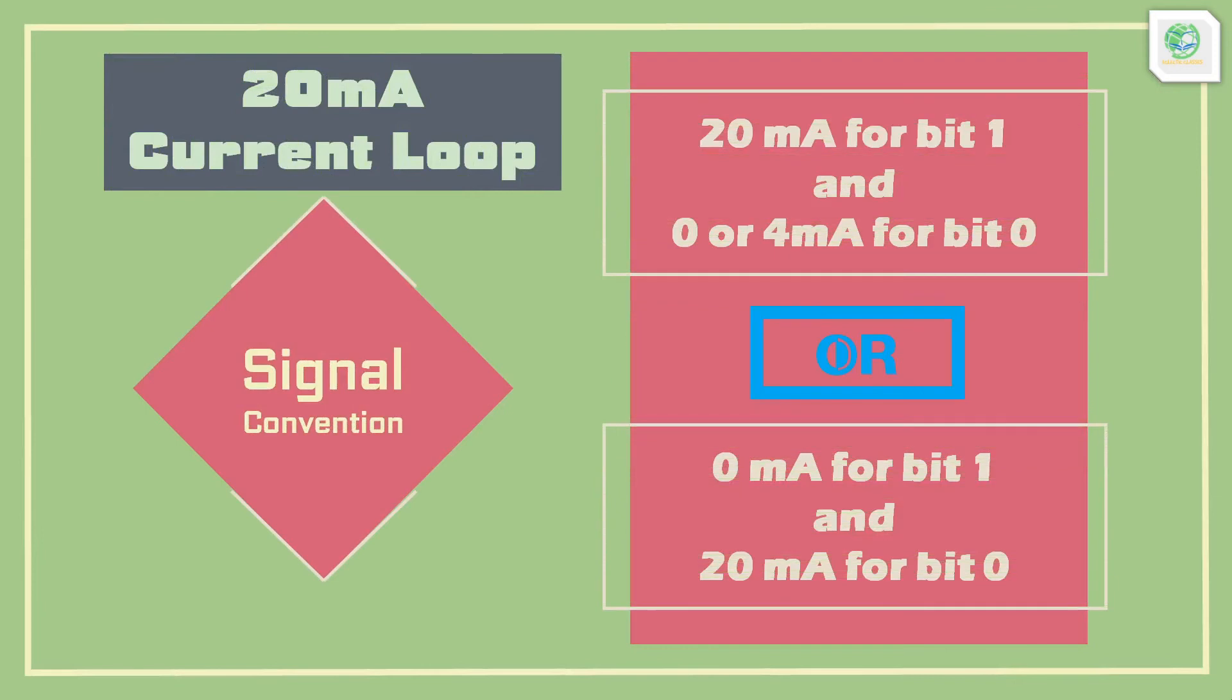Different conventions exist for 20mA current loop serial communication. Like 20mA for bit 1 and 0 or 4mA for bit 0. Some manufacturers use absence of current (0mA) as bit 1 and presence of current (20mA) as bit 0.